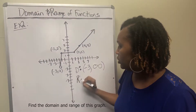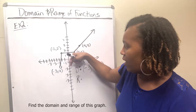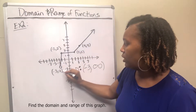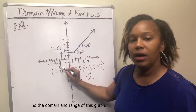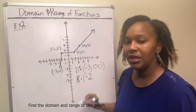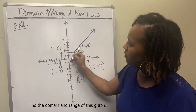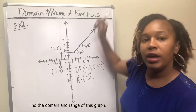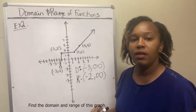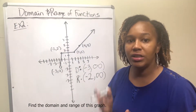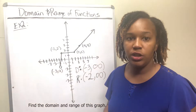For the range, you do the same thing, but now you're reading the graph from bottom to top. The smallest y value on this graph is at the point negative three, negative two — so your smallest y value is negative two. Since that's an open circle, you put a parenthesis instead of a bracket. Then the graph continues to go up in a positive direction, so that would be negative two to infinity. That would be the range of this graph. Again, when the graph is actually connected, you want to write your domain and range in interval notation.